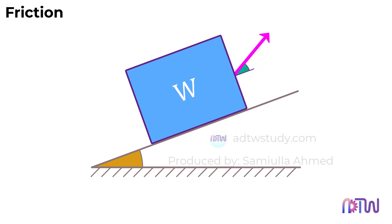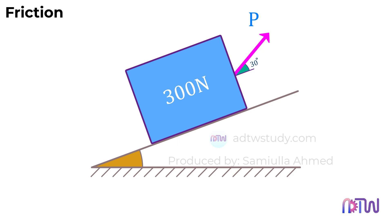Suppose a box of 300 newtons is resting on an inclined plane. In all my examples, I'm using 300 newtons as the weight of the box, but the weight of the box can vary. A force P, which is at an angle, is pulling this box resting on an inclined plane. The angle made by the force with the inclined plane is given as 30 degrees, and the angle made by the inclined surface is given as 20 degrees.